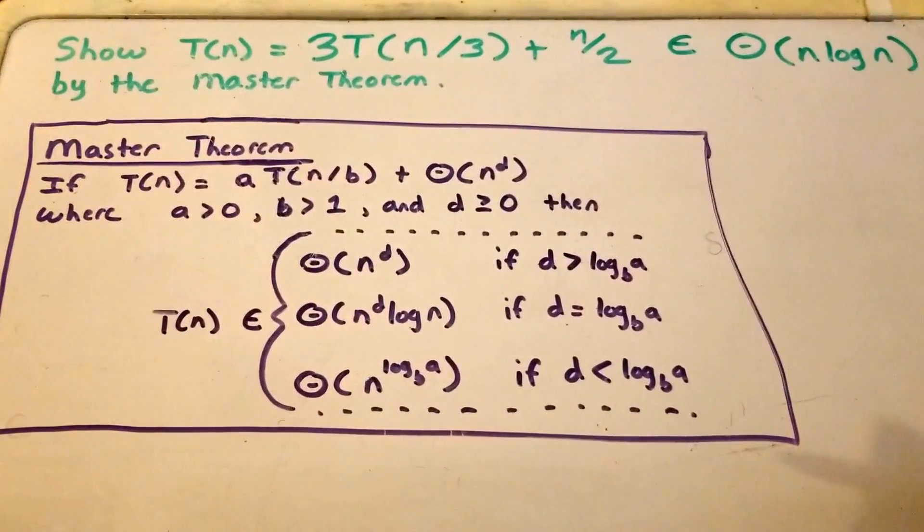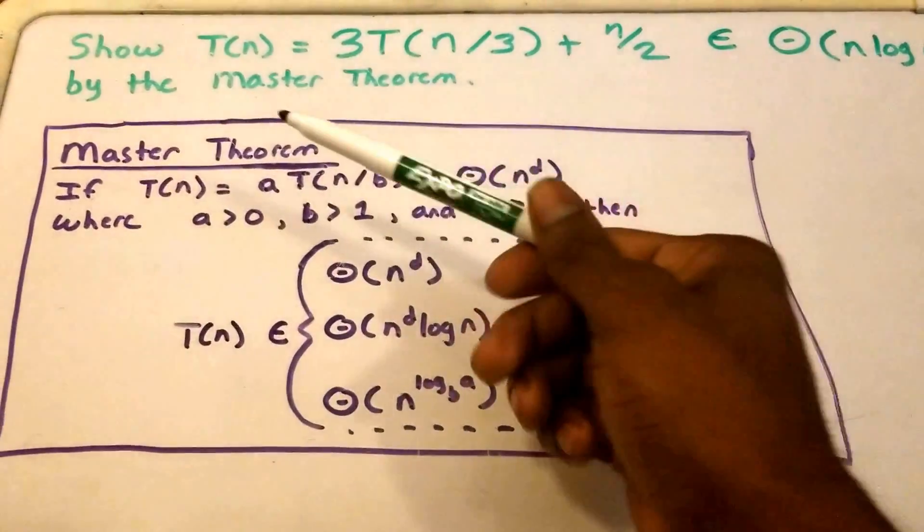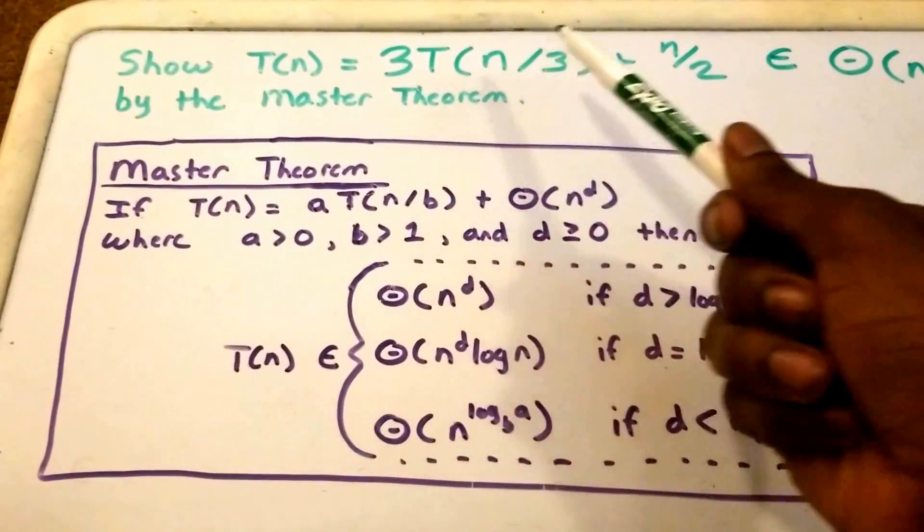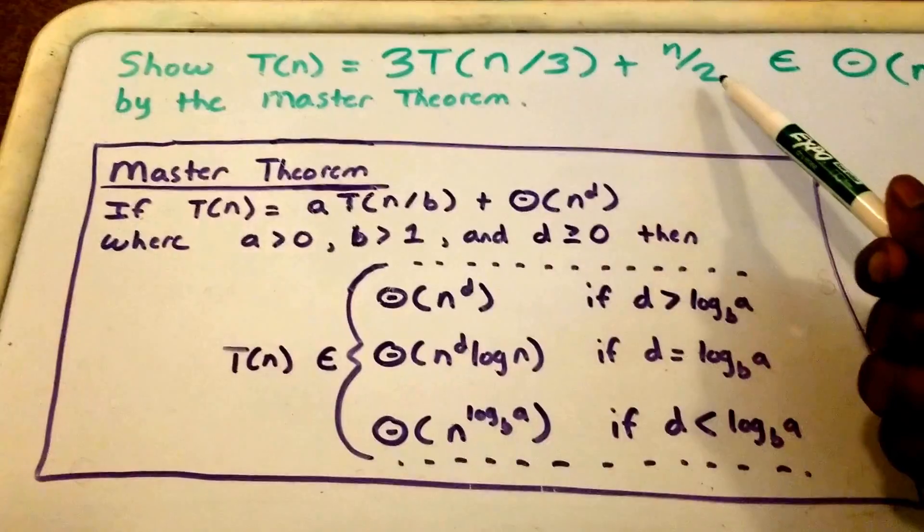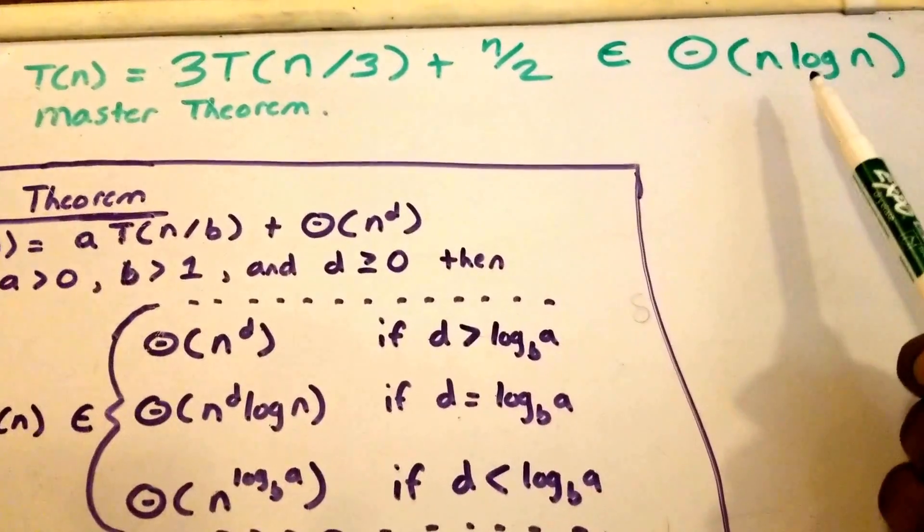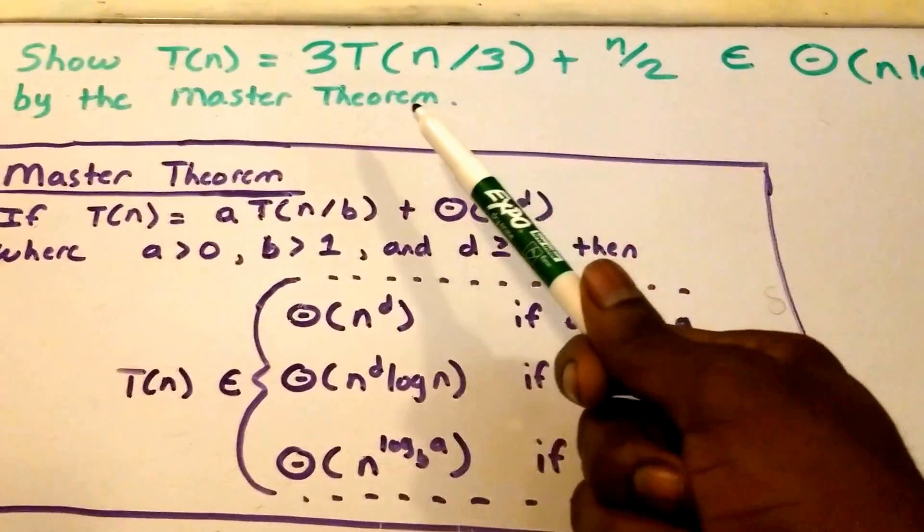Hey guys, and welcome to this video on the master theorem. So here we have our problem in green. It says show that T(n) equals 3 times T(n/3) plus n/2 belongs to big theta of n times log n by the master theorem.